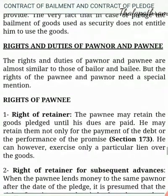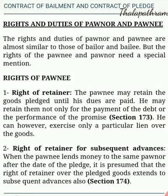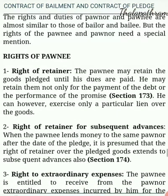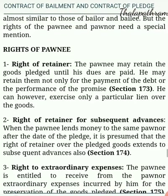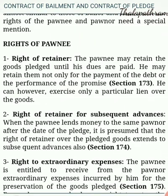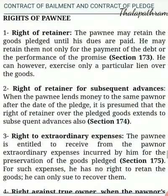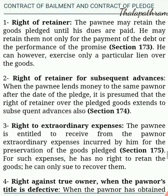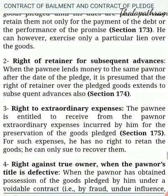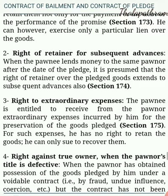Rights and duties of pawner and pawnee: The rights and duties of pawner and pawnee are almost similar to that of bailor and bailee, but the rights of pawnee and pawner need special mention. Rights of Pawnee. First, right of retainer: The pawnee may retain the goods pledged until his dues are paid. He may retain them only for the payment of the debt or for performance of the promise. Section 173. He can, however, exercise only a particular lien over the goods. Second, right of retainer for subsequent advances: When the pawnee lends money to the same pawner after the date of the pledge, it is presumed that the right of retainer over the pledged goods extends to subsequent advances also. Section 174.